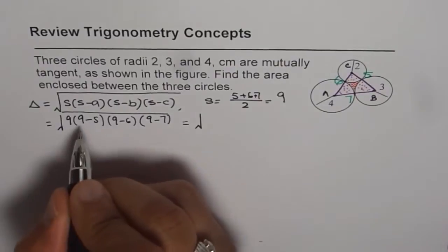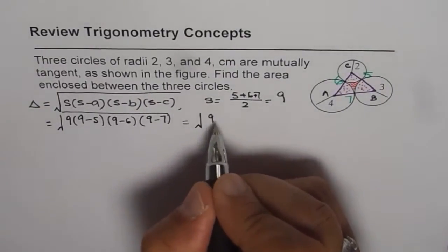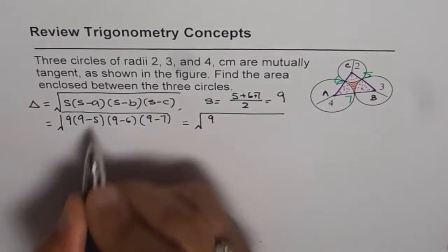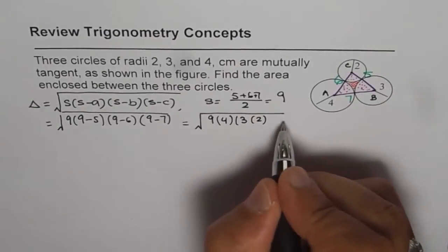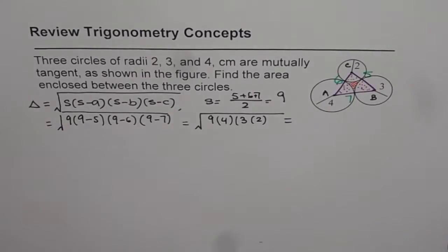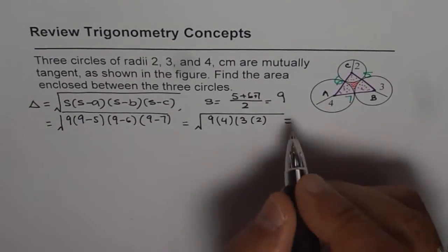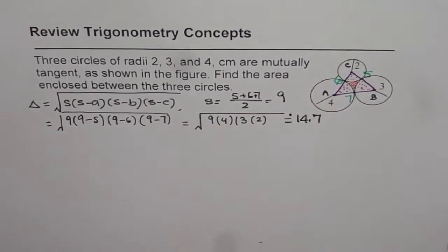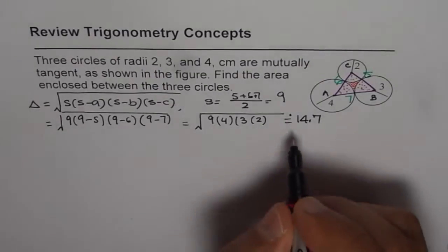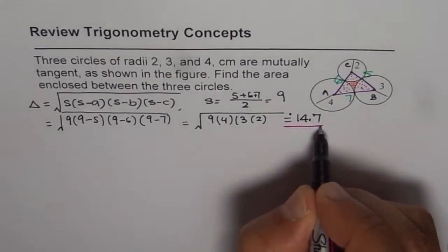And the area is 9 times. We can simplify this and we can write this as 9 times 4 times 3 times 2. And that gives us a value. Let's use the calculator to find the value and write as 14.7. So I will highlight this since that is the area of our triangle ABC and we are just going to use it.